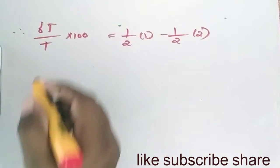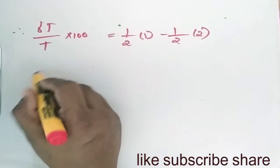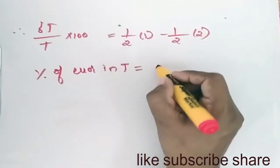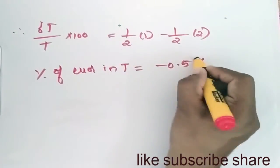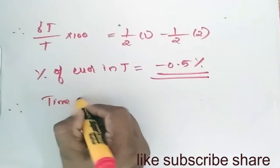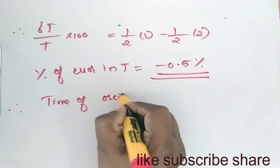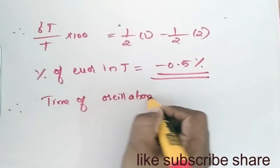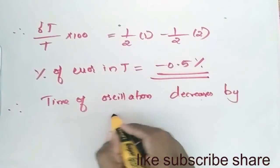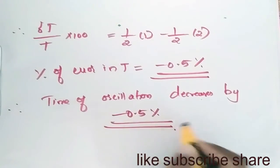This equals percentage of error in T = -0.5%. Therefore time of oscillation decreases by 0.5%.